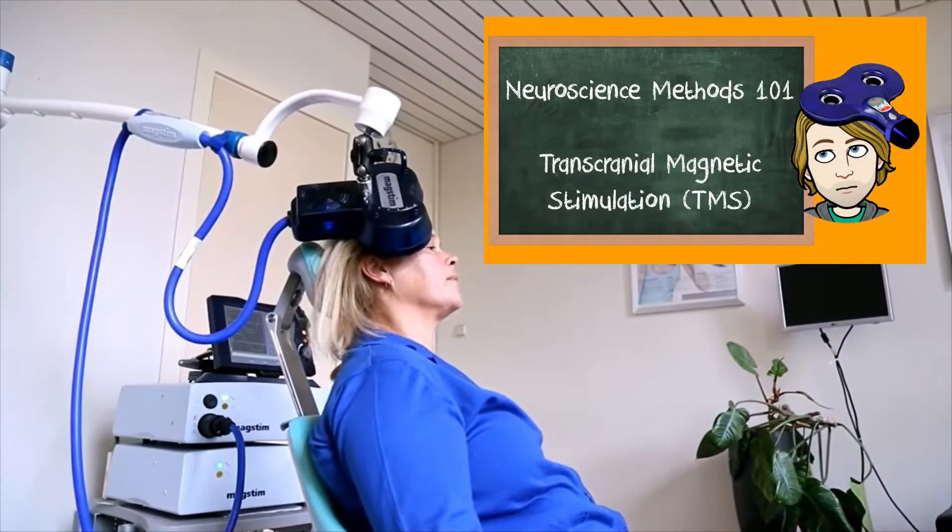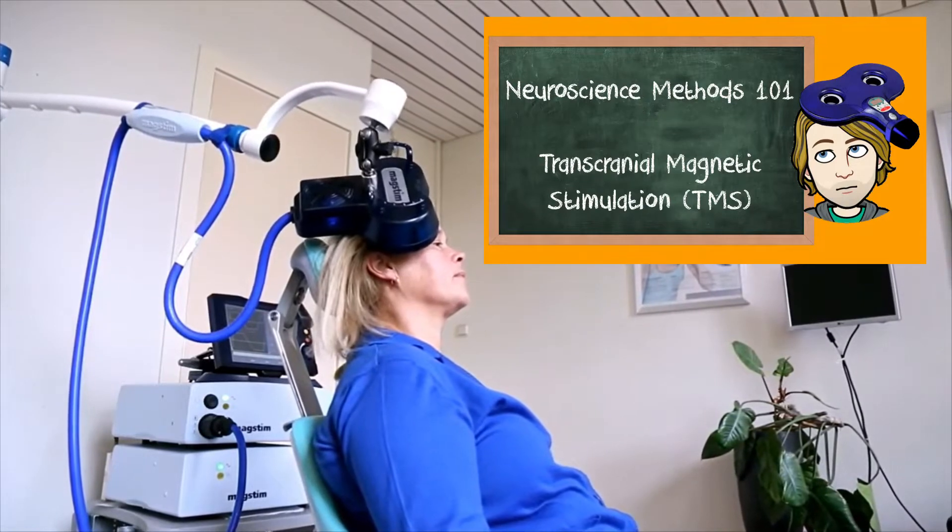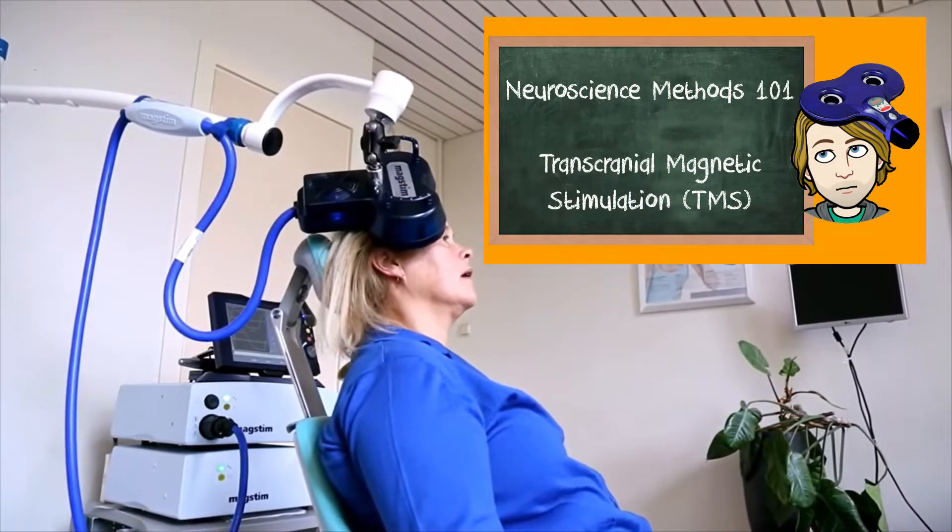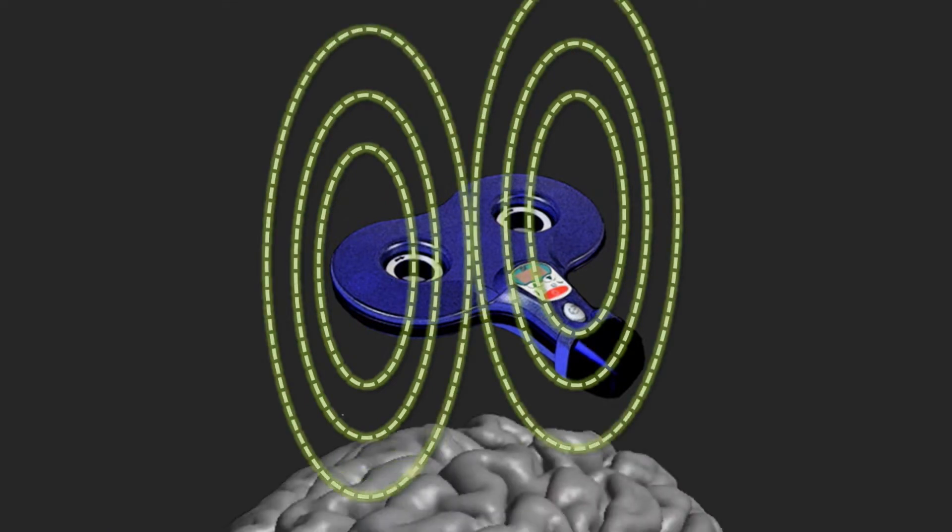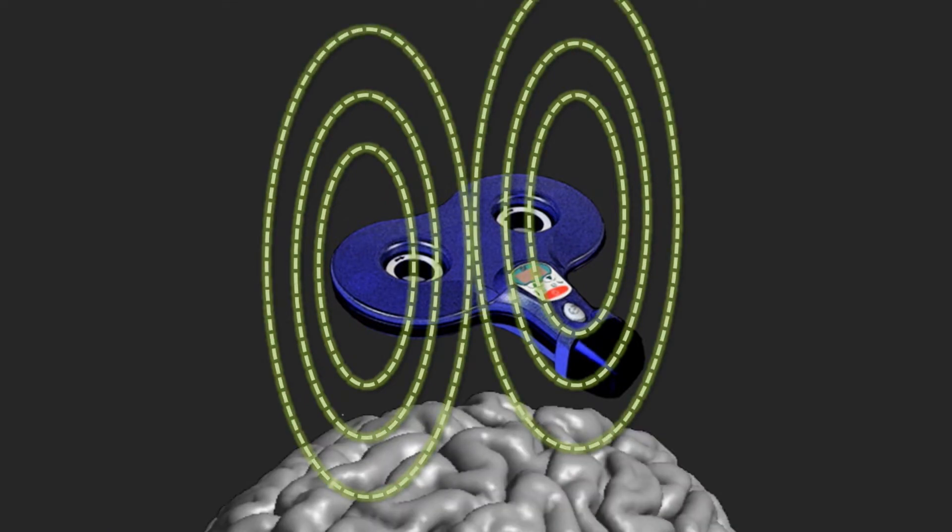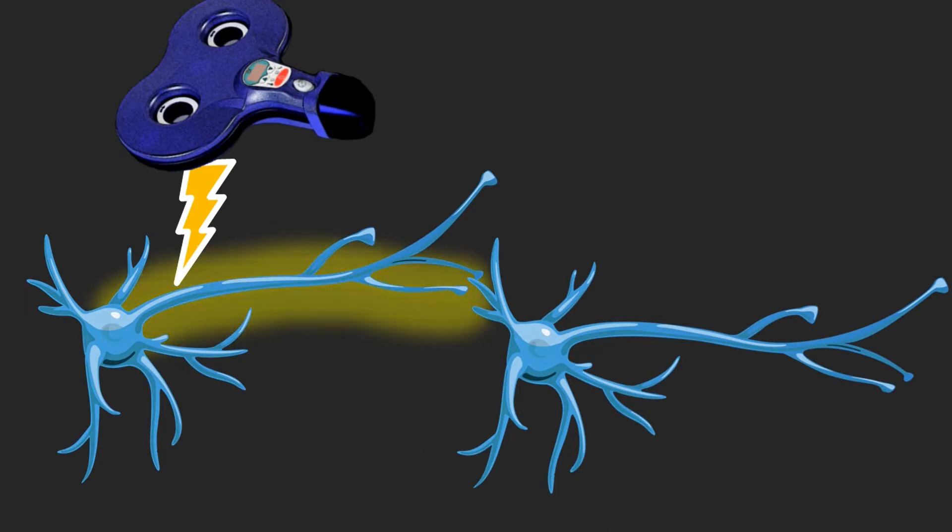In an earlier video we already discussed transcranial magnetic stimulation. We explained how a magnetic field on the head can induce a small electric field in the brain, which activates neurons, meaning that action potentials can be induced.